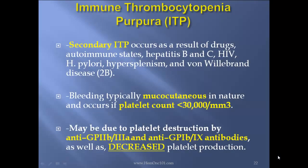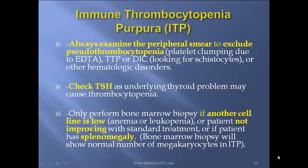Secondary ITP occurs as a result of drugs, autoimmune states, hepatitis B and C, HIV, H. pylori, hypersplenism, and von Willebrand disease type 2B. Bleeding is typically mucocutaneous and occurs if platelet count is less than 30,000. It may be due to platelet destruction by anti-2B3A and anti-1B antibodies as well as decreased platelet production. Always examine the peripheral smear to exclude pseudothrombocytopenia and platelet clumping due to EDTA, or TTP or DIC, looking for schistocytes or other hematologic disorders. Check TSH as underlying thyroid problems may cause thrombocytopenia. Only perform bone marrow biopsy if another cell line is low, there is anemia and leukopenia, or patient is not improving with standard treatment, or if patient has splenomegaly. Bone marrow biopsy will show a normal number of megakaryocytes in ITP.